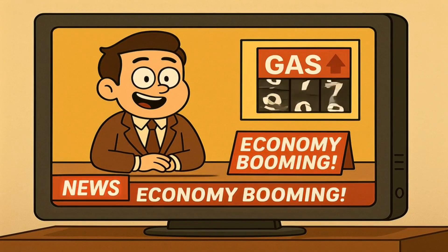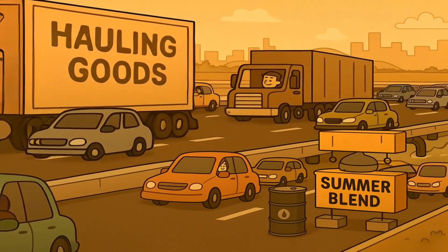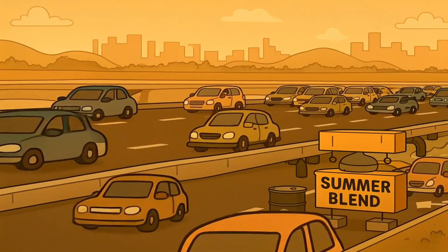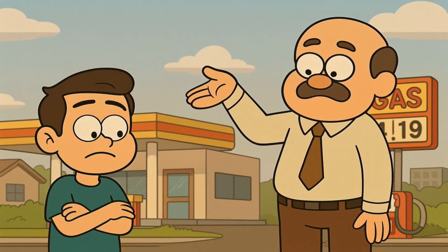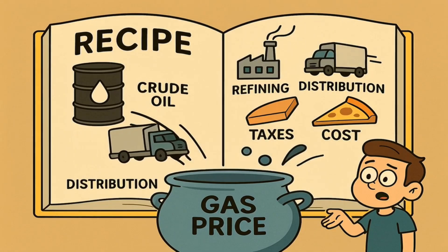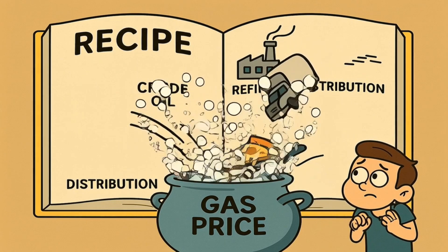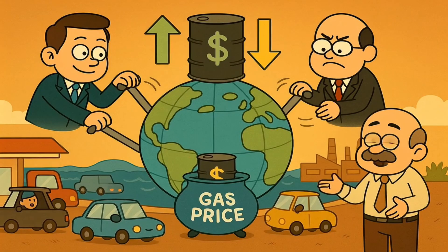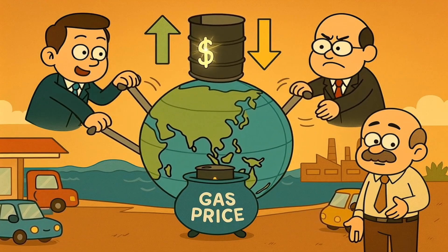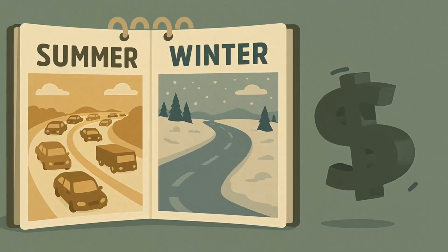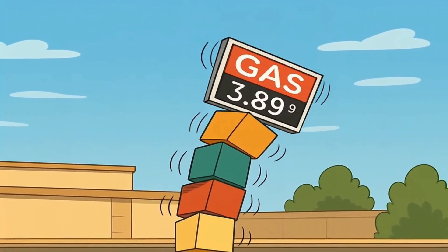So even though you feel powerless, your driving habits, multiplied by millions of other people, create the demand that helps steer the price. When a news report says that the economy is doing great, that can also make gas prices go up. Why? Because if the economy is good, it usually means that more people have jobs to drive to, and more businesses are shipping products around the country using big trucks. And all that activity means more demand for fuel. So there you have it — it's not some mystery, and it's not a conspiracy by the gas station on the corner to ruin your day. The price of gas is a big, messy recipe with four main ingredients: the cost of the raw dinosaur juice, the cost of cooking it into gas, the cost of bringing it to you, and the government slice.